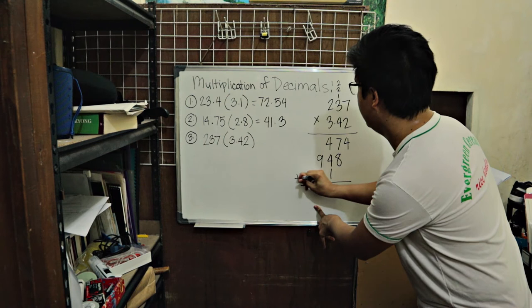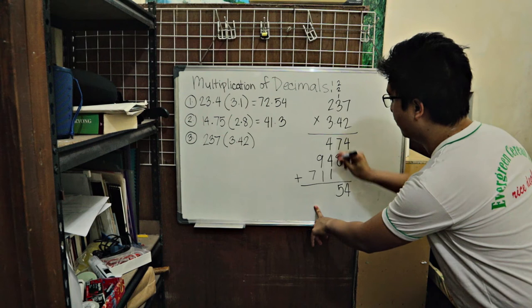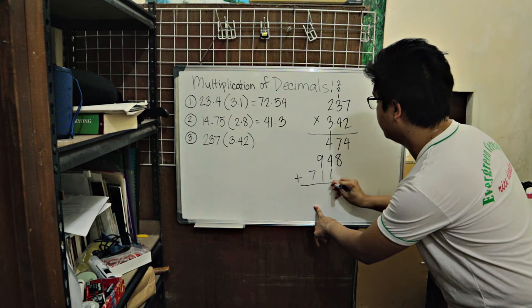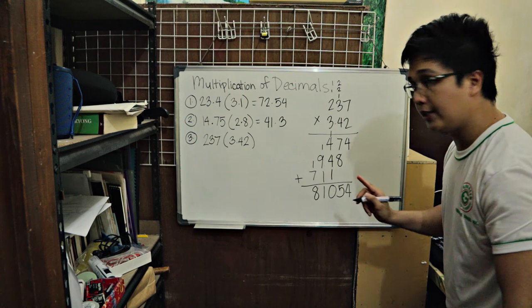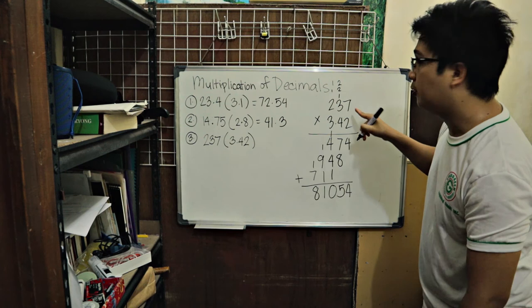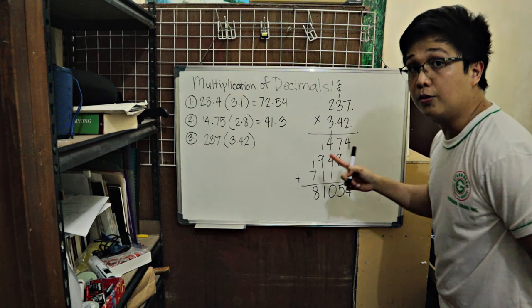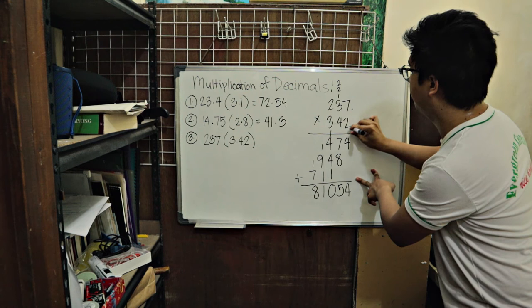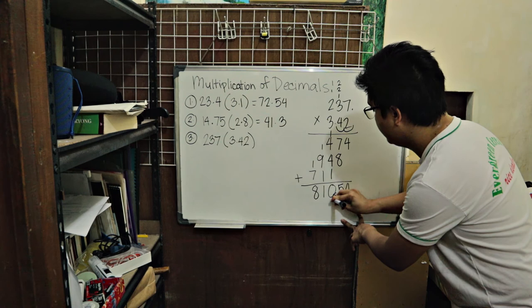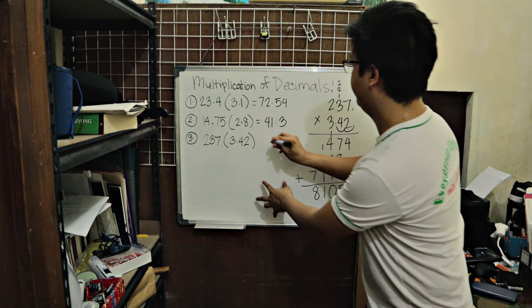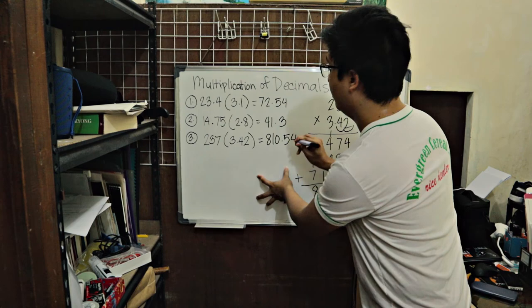And then you just add everything. Bring down the 4. 7 plus 8, 15. So 5, carry 1. 1 plus 4 is 5. Plus 4 plus 1, that's 10. So 0, carry 1. 1 plus 9 plus 1 is 11. So 1, carry 1. 1 plus 7 is 8. So 8, 1, 0, 5, 4. How many decimal places do we move? Over here, 237. The decimal point is at the very right. Meaning you don't have to move it anymore. But 3.42, we have to move. So 1, 2. There are 2 decimal places. So we will also move the answer by 2 decimal places. So 1, 2. And our answer is 810.54 or 810 and 54 hundredths.